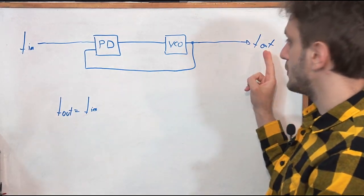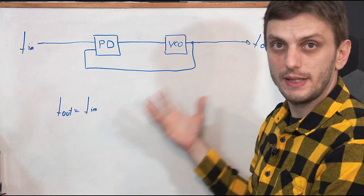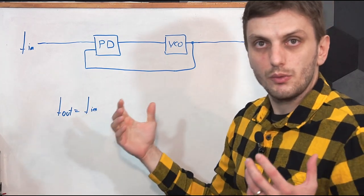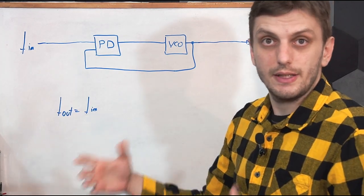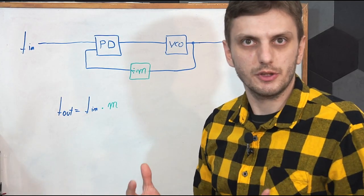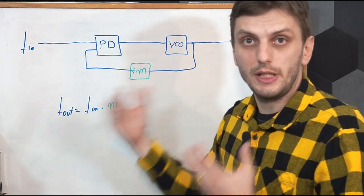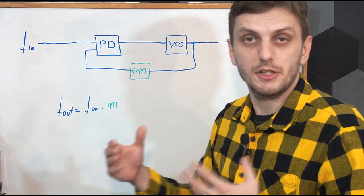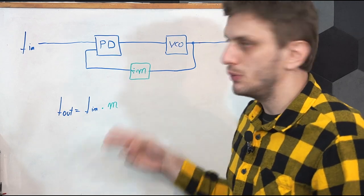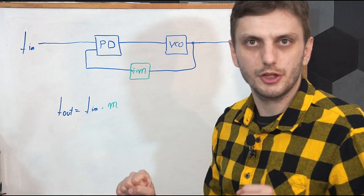So if we want to have a different frequency at the output than at the input, we need to do something with that signal to get it to the same frequency as our input signal — basically we need a block that can divide the frequency. What we need is a counter circuit: a circuit that will count pulses and only output a pulse when a certain number of input pulses have occurred. This sort of circuit can be built to divide by any integer number — two, three, four, and so on.